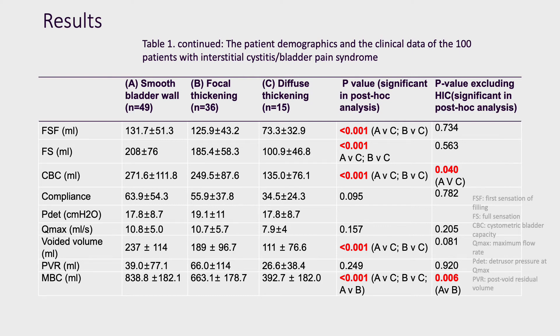After excluding patients with Hunner's IC, only CBC and the maximum bladder capacity (MBC) were still smaller in patients with diffuse bladder wall thickening.